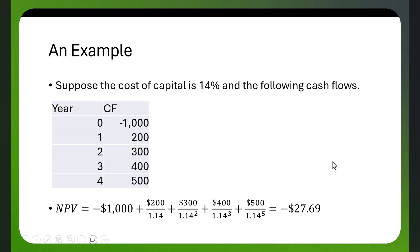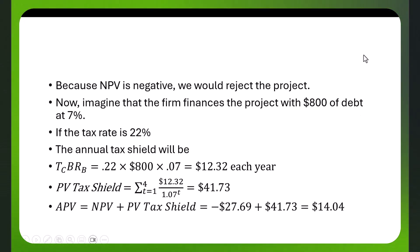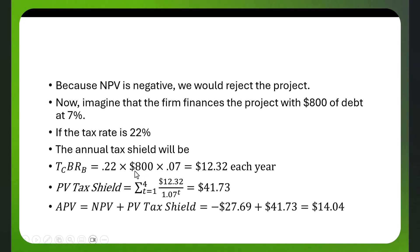But if we consider the financing effects, it's possible that the project may be good. Let's imagine that the firm finances the project with $800 of debt at 7%. With a tax rate of 22%, the annual tax yield is the tax rate times the amount of debt times the rate on those bonds: 0.22 times $800 times 7%, which turns out to be $12.32 per year. The present value of that $12.32 tax yield over four years is $41.73.